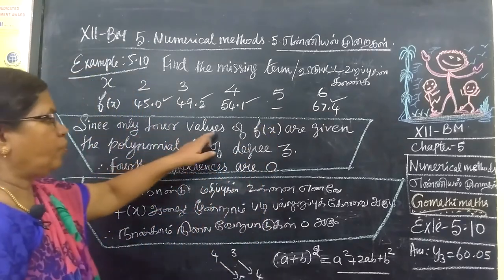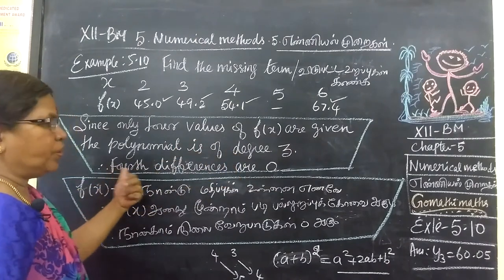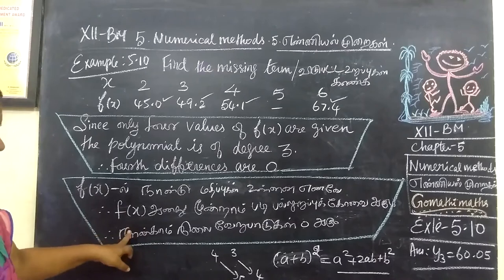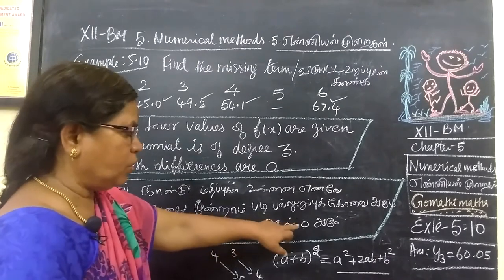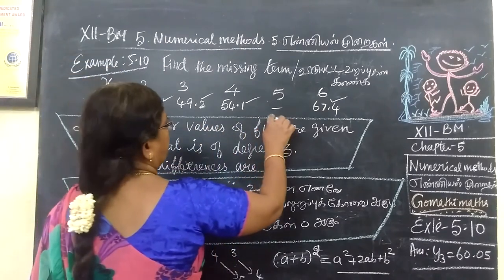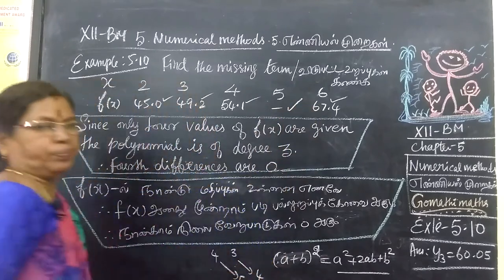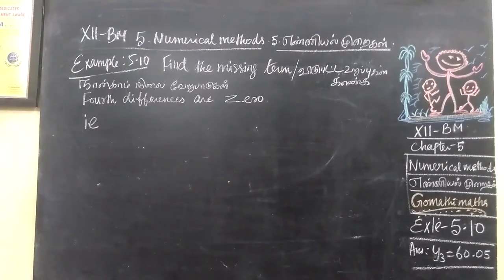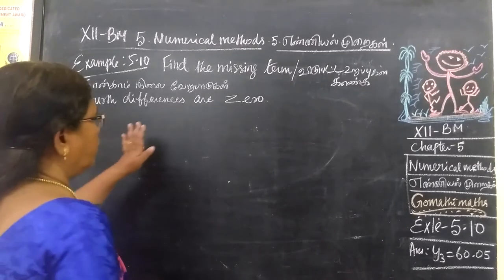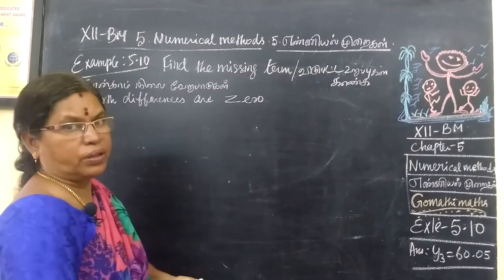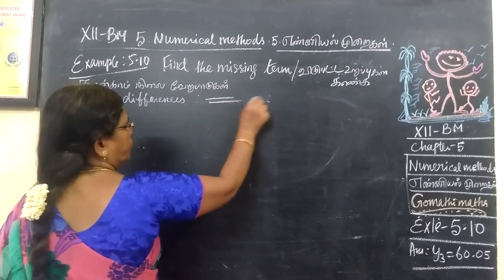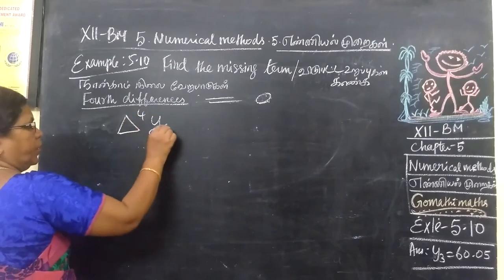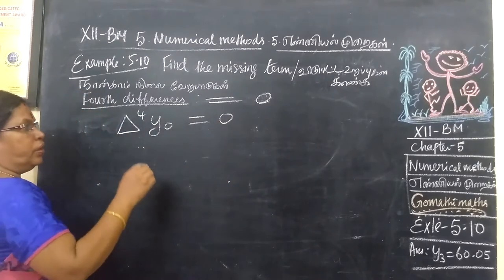Since 4 values are given, the degree should be equal to 3. Therefore, the 4th difference is equal to 0. The 3rd difference is Δ³ (del cube), the 2nd difference is Δ² (del square), and the 4th difference Δ⁴ equals zero.